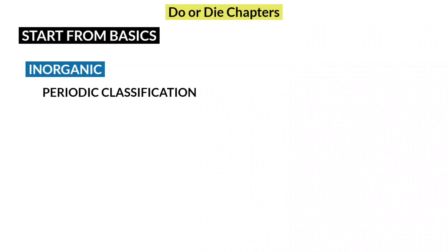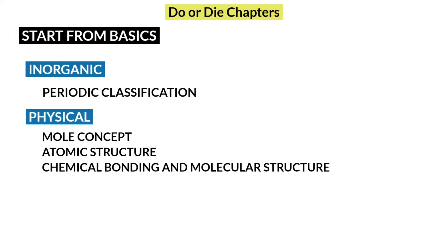So I ask you to start from basic chapters of chemistry like periodic classification for inorganic chemistry, mole concept, atomic structure, chemical bonding and molecular structure for physical chemistry, and general organic chemistry for organic chemistry. If you do like this, your basics will be strong and you can master other chapters very easily.